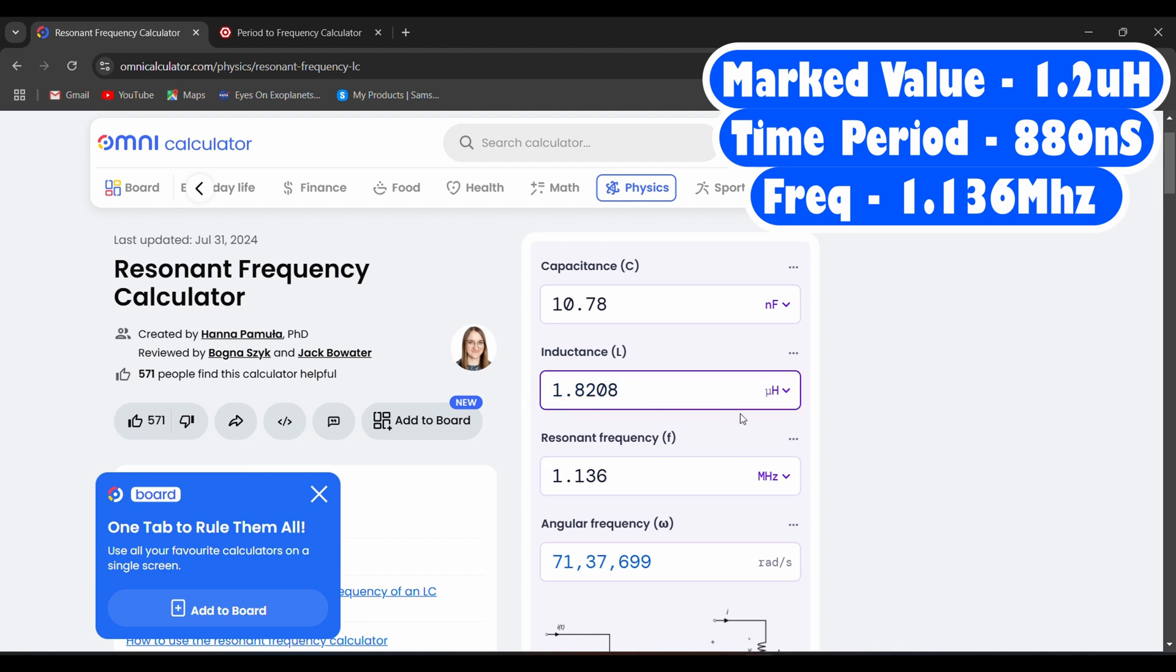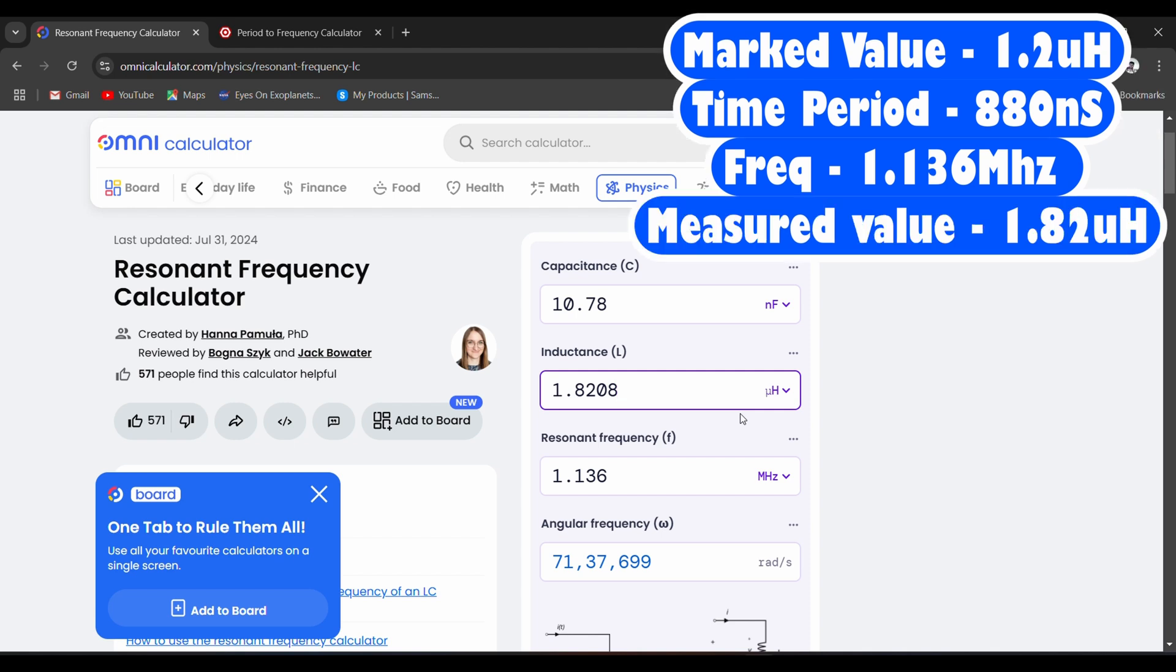So this gives us our inductor value, which is 1.82 microhenry, which is pretty close. And it's 1.2 microhenry, that's the value that was written, and the value that we got is 1.82. Now let us calculate the values for some other inductors.